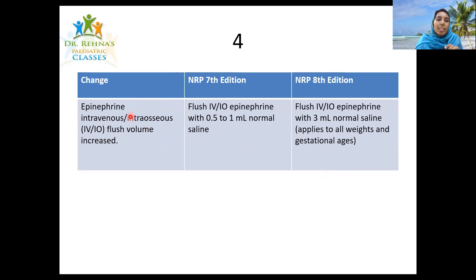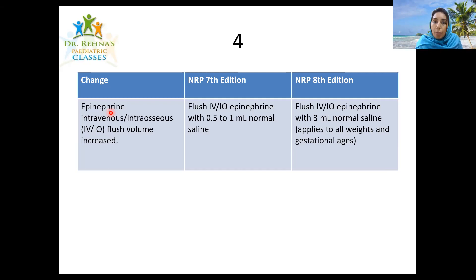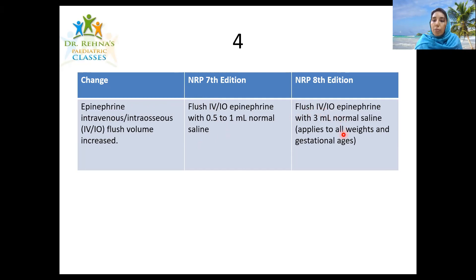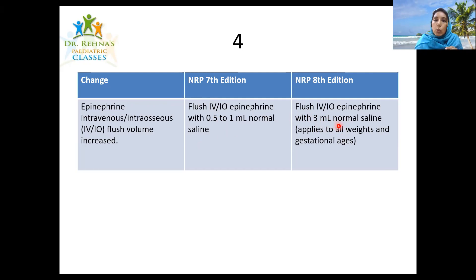The fourth change is about the flush volume when giving epinephrine. According to NRP 7, the flush was 0.5 to 1 ml of normal saline. This volume was found to be insufficient. In NRP 8, the recommendation is to increase the flush volume to 3 ml of normal saline. This applies to all weights and gestational ages — the flush volume is increased to 3 ml of normal saline.